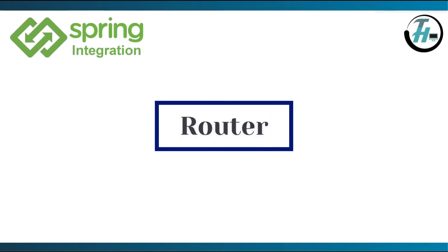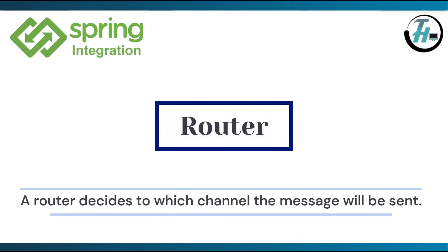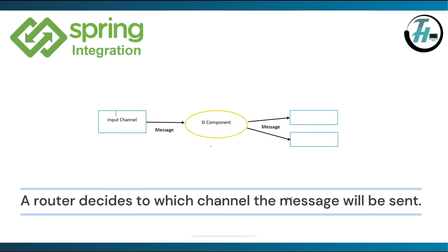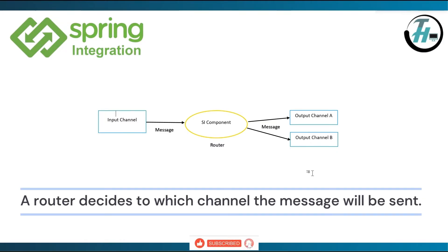Next is router. A router decides to which channel the message will be sent. The message goes from the input channel to the router component. The component further decides and redirects the message to output channel A or output channel B based on its criteria.